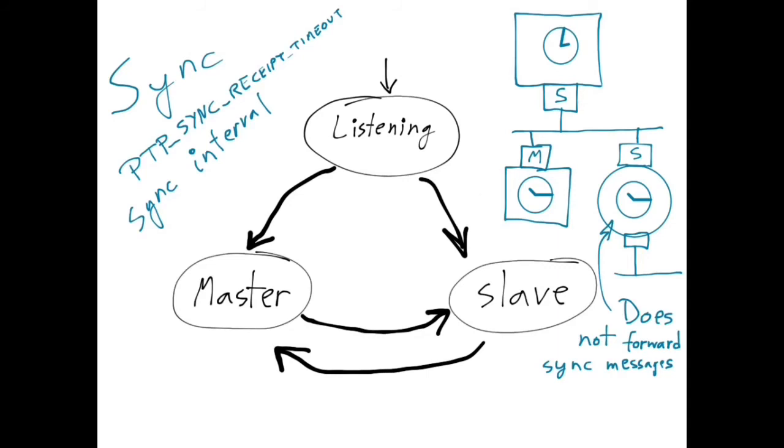At this point, everything is working fine. The two slaves are receiving sync messages from the master and using them to synchronize their clocks.